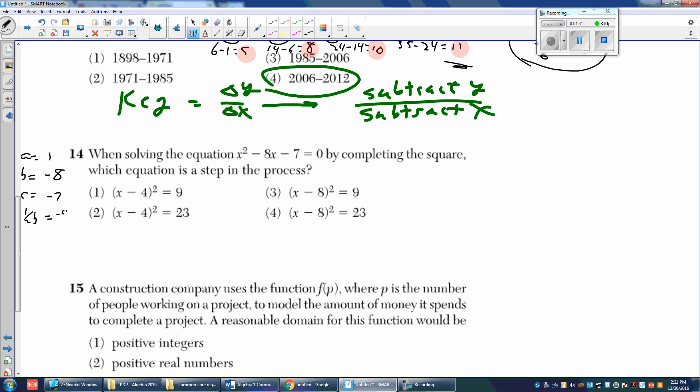Half of B is negative 4, and then half of B squared is 16. Now that we have our B and our half of B squared, those are the ones we're going to use when we're completing the square. Remember, this is called completing the square.